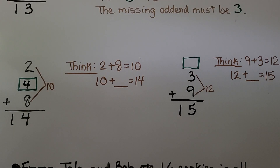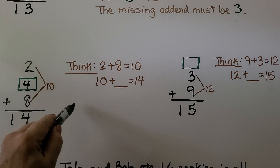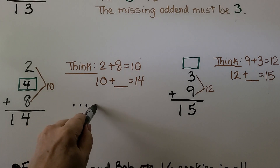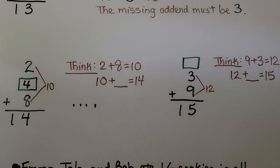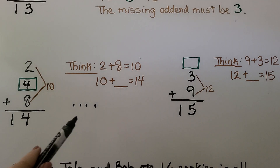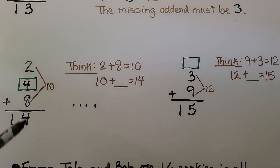We could also count on using little dots as counters. We say 10, 11, 12, 13, 14 — we needed four little dots to count up to 14. We must put a four there as the missing addend.